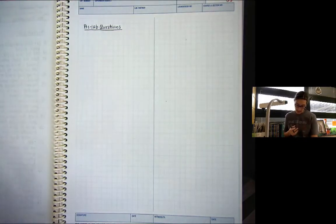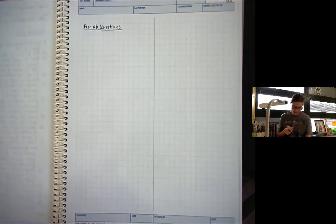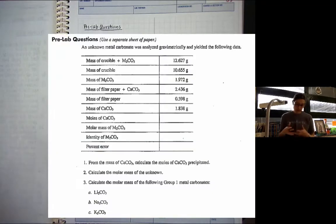So if you look at the lab handout, it says to use a separate piece of paper, but it's just going to go right into our lab notebook. And in the pre-lab questions, it gives us a data table. And it says, an unknown metal carbonate was analyzed gravimetrically and yielded the following data. And then they give us this data table here.